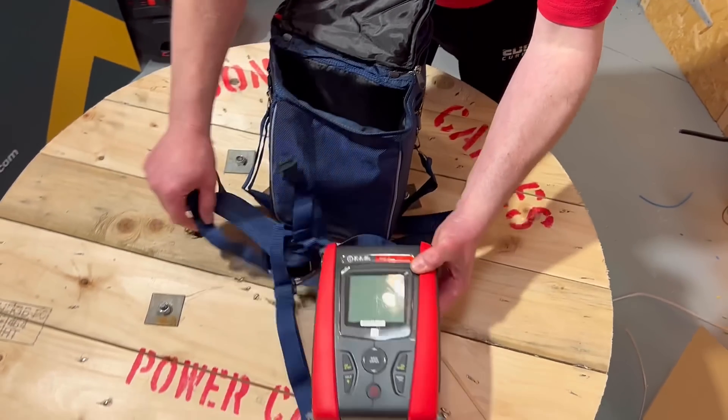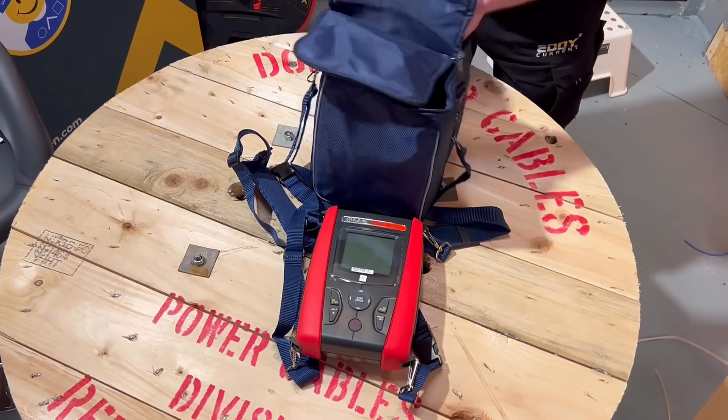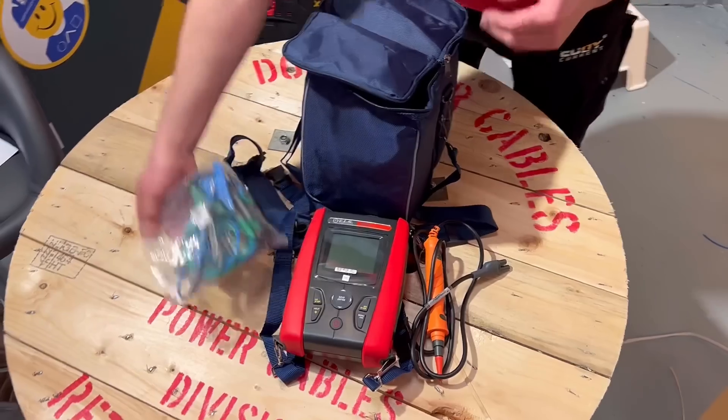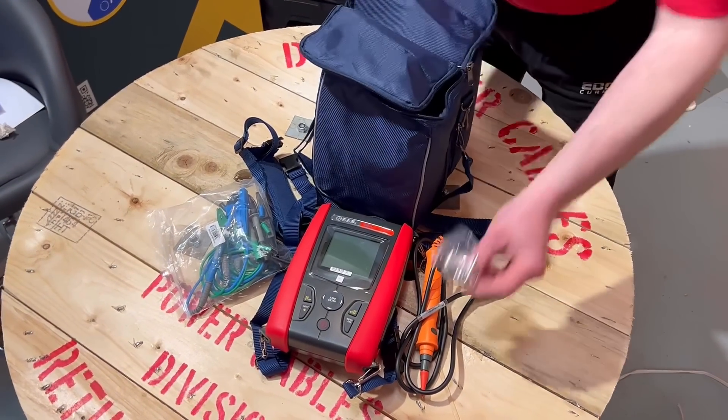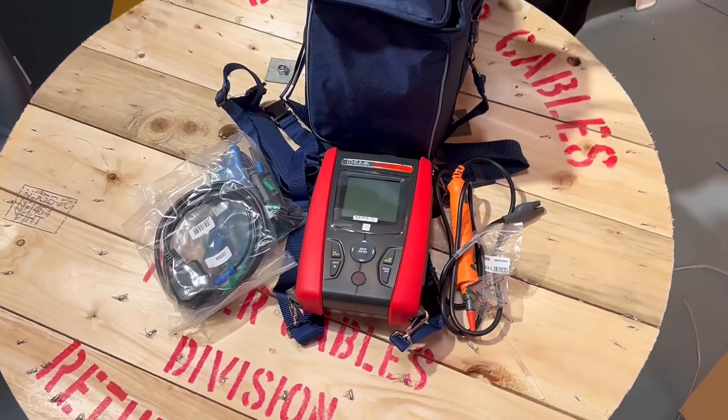Today we're going to take a look at the TIS multi-function eco tester. Yes, eco does mean it's reasonably priced, but that doesn't mean you don't get some fantastic features and a couple of standout ones that we're going to highlight in this video. To do that, I'm going to carry out an insulation resistance test on a circuit that Rick's installed here.